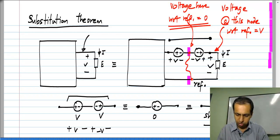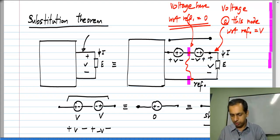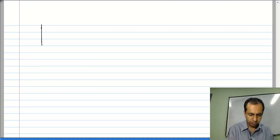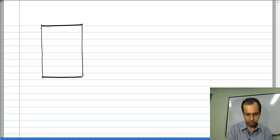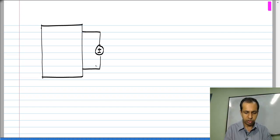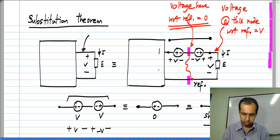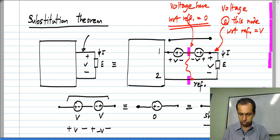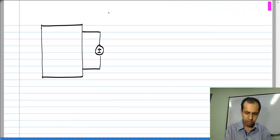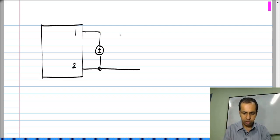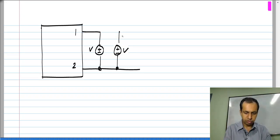So I can connect those two nodes together. Let me redraw this new configuration: I have the rest of the circuit and the first voltage source. Since I have short-circuited it — numbering these as terminals 1 and 2 — I have short-circuited terminal 2 of the circuit. Then from this point on I also have a voltage source of value V and the element E.